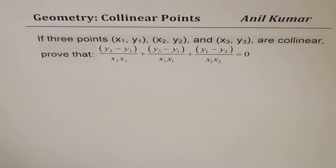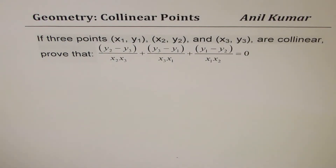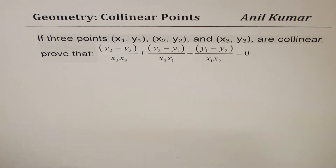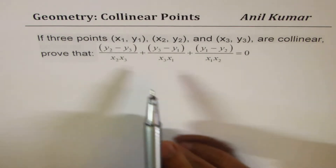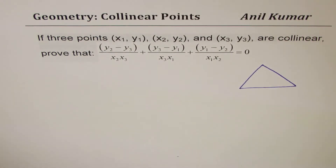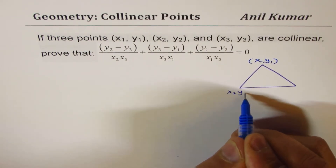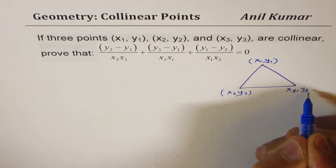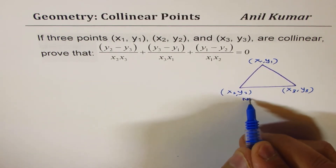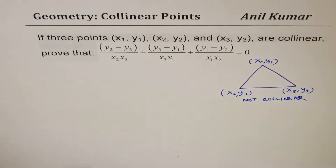Let's begin with the very first question, which is based on the formula for area of a triangle. We are given three points (x1, y1), (x2, y2), (x3, y3), and we have to prove that if they are collinear, then that expression is true. So let us consider that they are not collinear. If they are not collinear, then we can form a triangle with vertices at (x1, y1), (x2, y2), and (x3, y3). If there is a triangle, we can find the area of this triangle.